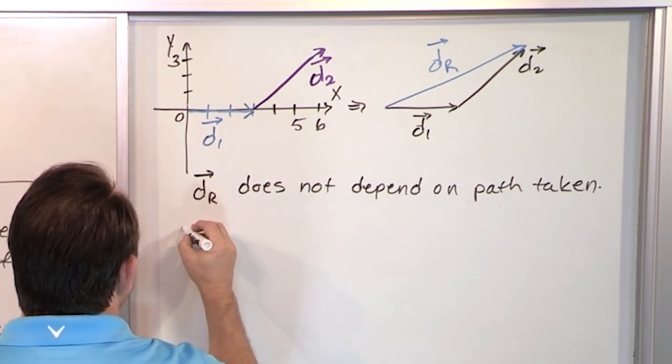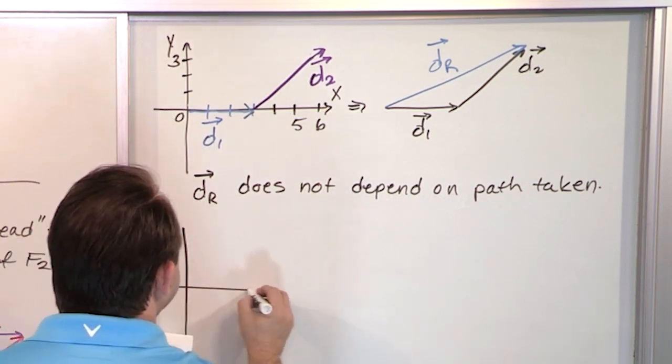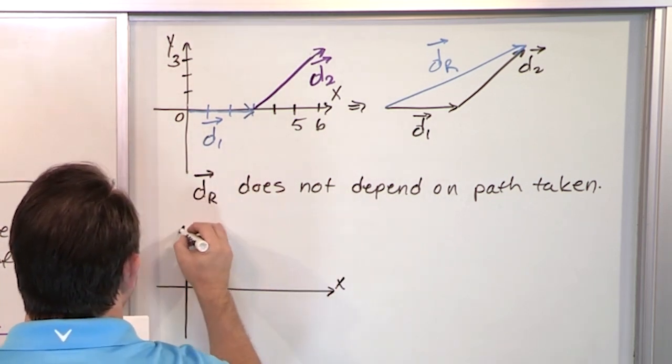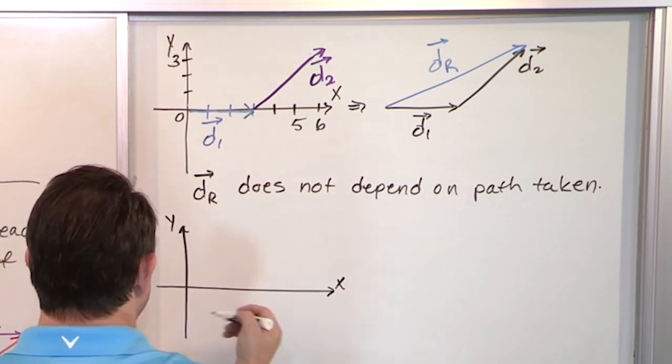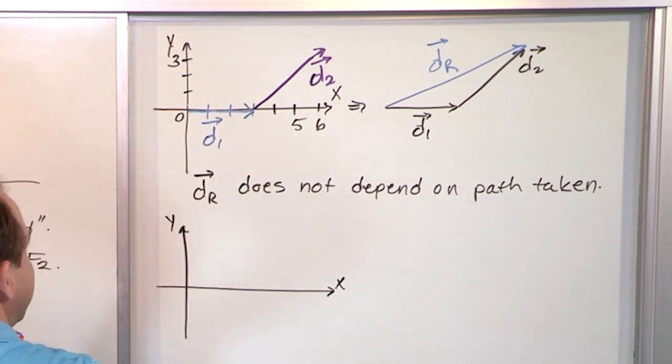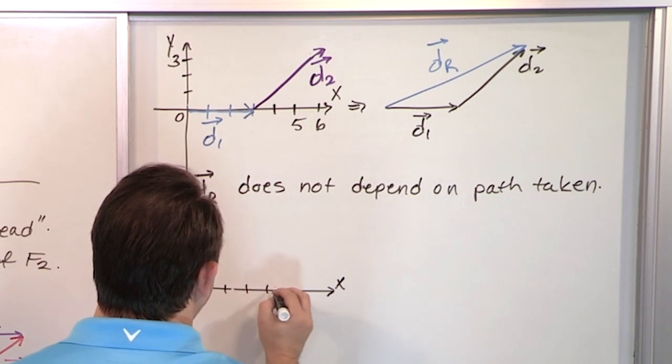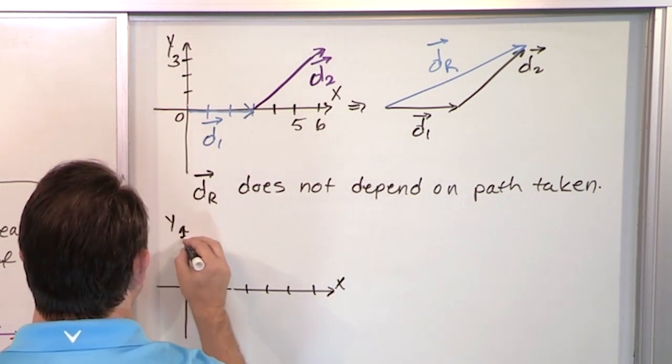But let's just say we have, again, the same exact thing. Nothing is different. But let's go ahead and draw. Let me go ahead and draw. One, two, three, four, five, six. One, two, three.